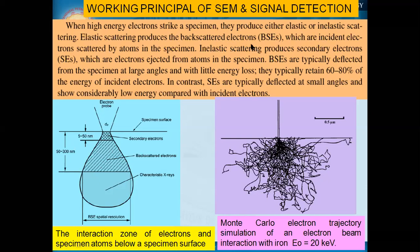In elastic scattering, the same electron comes back after scattering from the specimen atom. Inelastic scattering is like a collision — sometimes when you hit one ball with another, it is completely replaced. Inelastic scattering produces secondary electrons, which are electrons ejected from atoms in the specimen. So in elastic scattering, the same electron comes back, whereas in inelastic scattering, another electron is ejected from the atoms in the specimen.